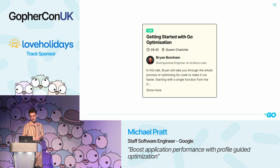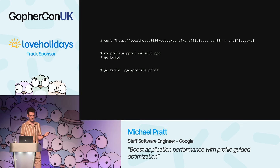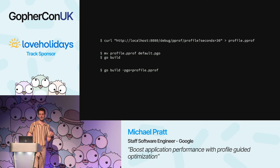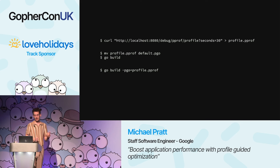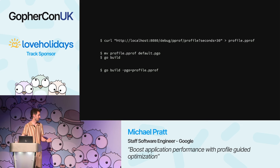To enable PGO, we used a quick curl command to collect the profile. Once collected, rename it to default.pgo and place it in the same directory as our package main — go build will automatically detect this file and use it as the profile during compilation. We recommend keeping profiles alongside your source code in your repository so anyone who fetches your code can reproduce the exact same build. If that's not possible, you can explicitly pass a path to the profile with the -pgo flag.